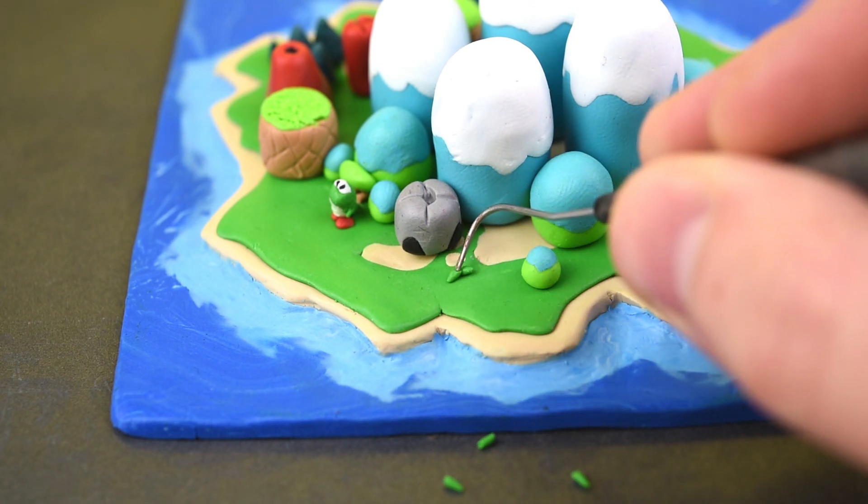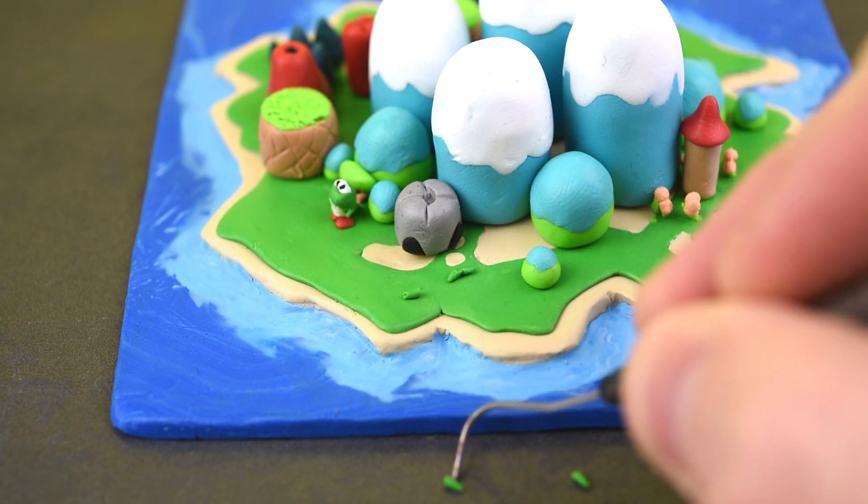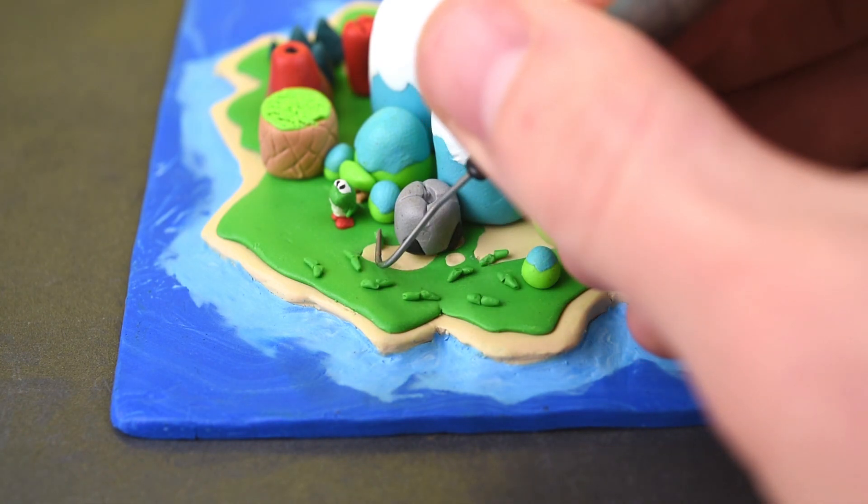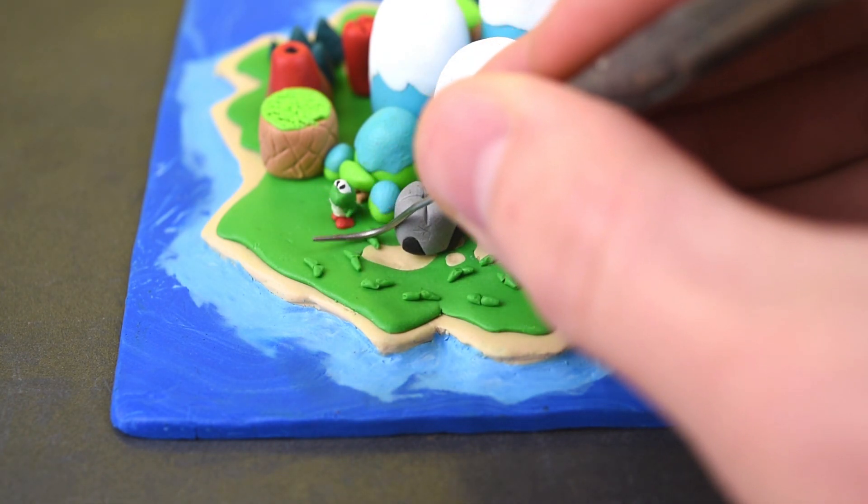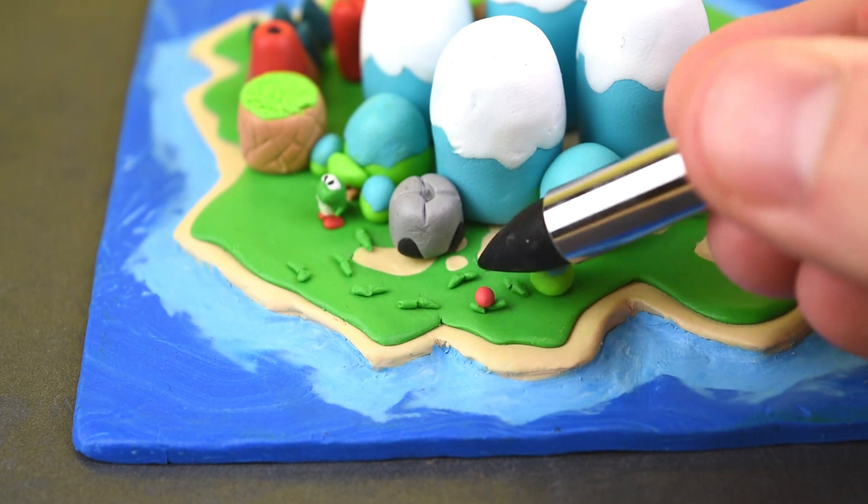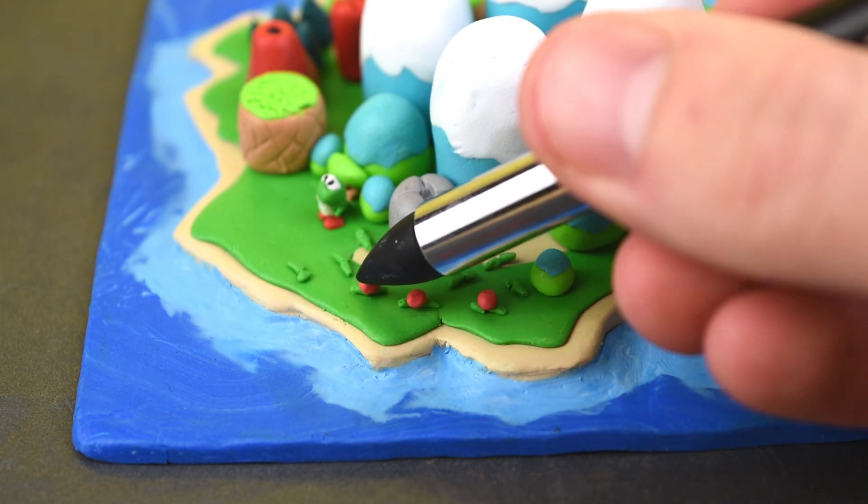Over here we have a different kind of flower. These are much easier to create. We just have some leaves on the ground, and then for the flower itself, we're just going to use a ball of red clay. And although it's very basic, I think that it looks very good.